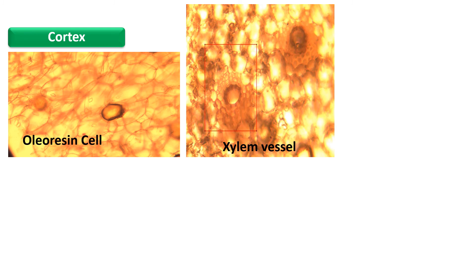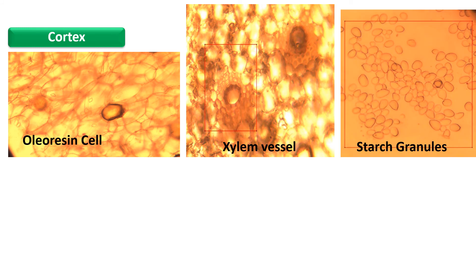The xylem vessel is important for the transport of water. The starch granules are noted easily in the transverse section of ginger. These are roughly drop-shaped, or you can say muscle-shaped.